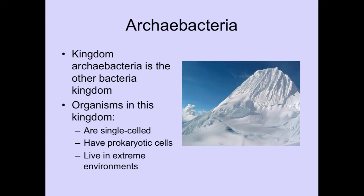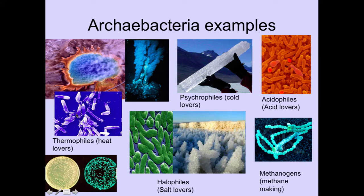Last is archaebacteria. Kingdom Archaebacteria is the other bacteria kingdom. These are our extremists — they are single-celled and prokaryotic, but the difference is they live in very extreme environments: places too hot, too cold, too acidic, or too salty for other life to exist. You have thermophiles, which are heat lovers found near ocean floor vents where magma comes out. You have psychrophiles, which are cold lovers; acidophiles, which are acid lovers; methanogens, which are methane makers; and halophiles, which are salt lovers. Archaea is basically like eubacteria, except they are extreme.